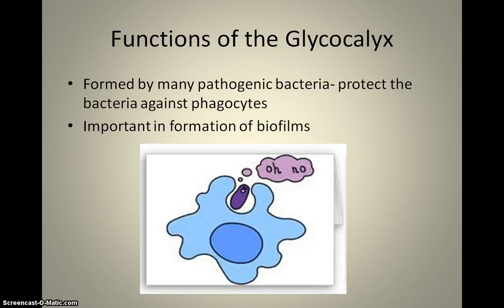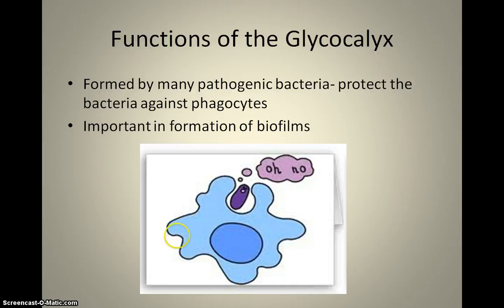The glycocalyx functions to prevent loss of water and nutrients, to adhere to surfaces, and for protection. It can also be very important in pathogenic bacteria because the human immune system wants to identify foreign organisms — like macrophages that engulf and digest bacteria. The glycocalyx can help prevent that by masking the bacterium, helping it stick together and preventing the macrophage from being able to engulf it.